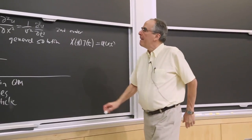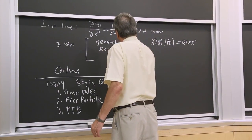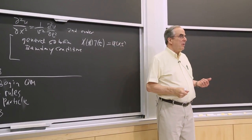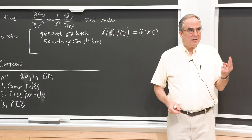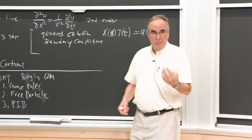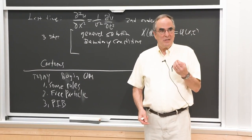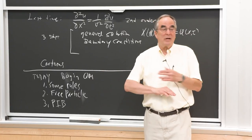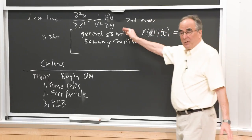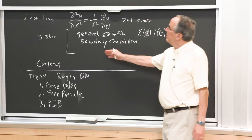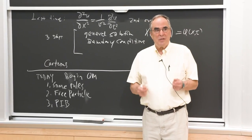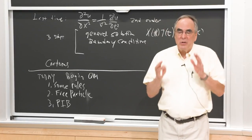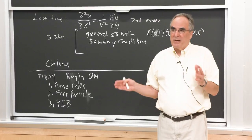You set up the boundary conditions. If it's a second order differential equation, you're going to need two boundary conditions. When you impose two boundary conditions, the second one gives some sort of quantization — it makes the solutions discrete rather than a continuous set. The general solution covers continuous possibilities, but now the boundary conditions give us something we can start to visualize.